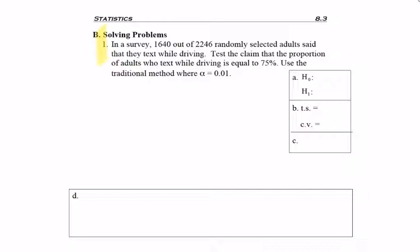Problem 1 from Section B. In a survey, 1,640 out of 2,246 randomly selected adults said they text while driving. Test the claim that the proportion of adults who text while driving is equal to 75%, use the traditional method where alpha is 0.01.